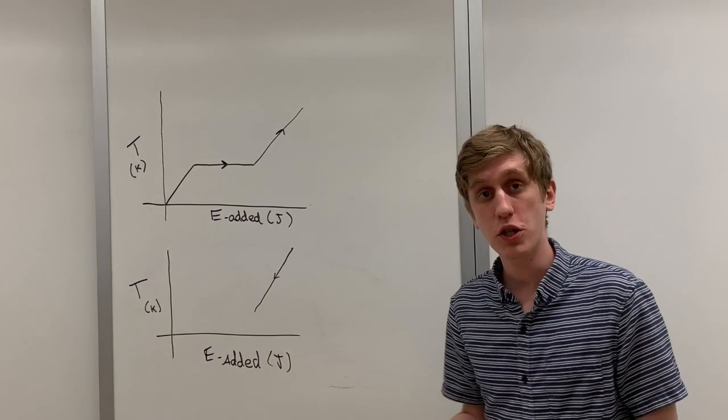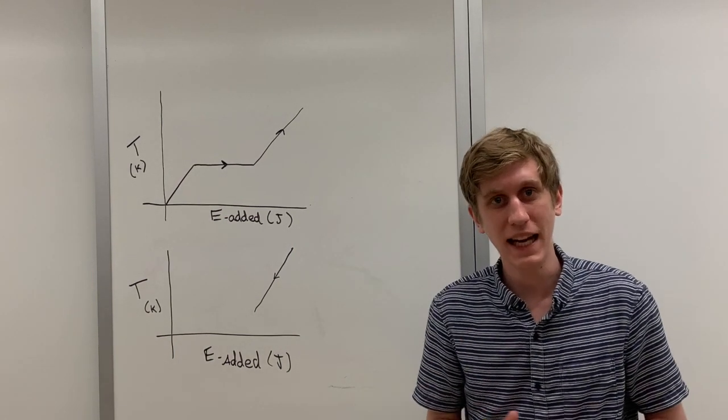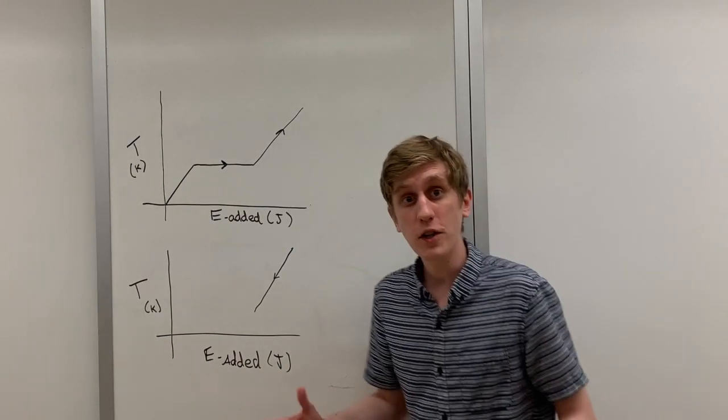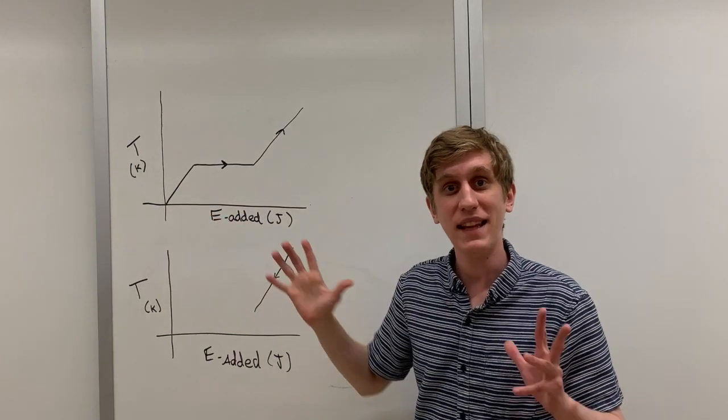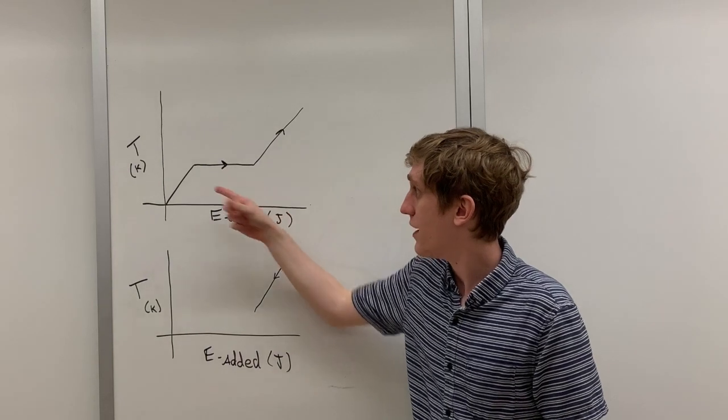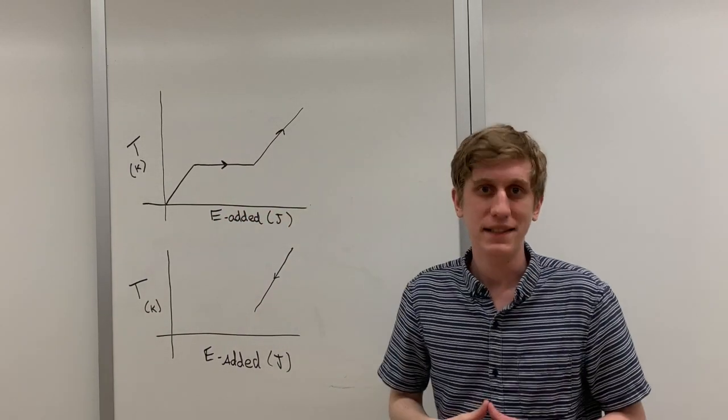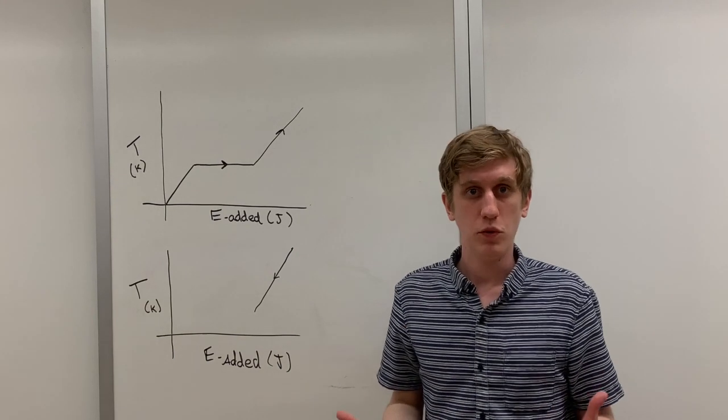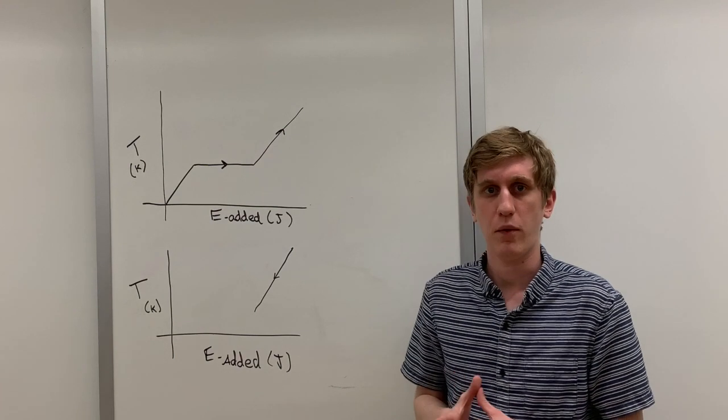I have here two temperature versus energy added diagrams for two different pieces of the heat pack cycle. The first piece is the melting of the heat pack. At the left hand side of this diagram we have the heat pack as a solid. As we warmed it up in the boiling water it eventually melted and then warmed up further as a liquid. This matches with the three phase model just as water when we warm it up would also melt and turn into a liquid.